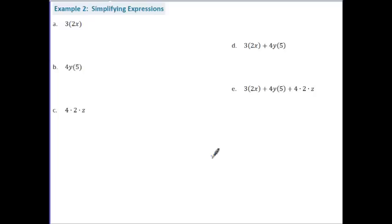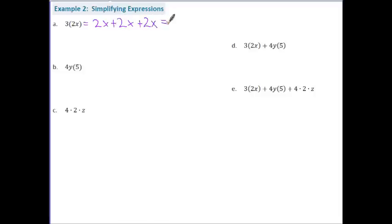Looking at Example 2, we're going to start talking about multiplication. Multiplying by three really means we have three two-x's being added together: two x plus two x plus two x, which combines to become six x. Notice that to get our answer we could have just multiplied three times two to give us six. We can take that approach here.